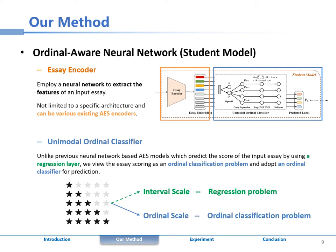Among them, essay encoder is used to extract the feature embedding of the input essay. By viewing AES as an ordinal classification problem, ordinal classifier can predict the unimodal label distribution on the predefined scores for each input essay.